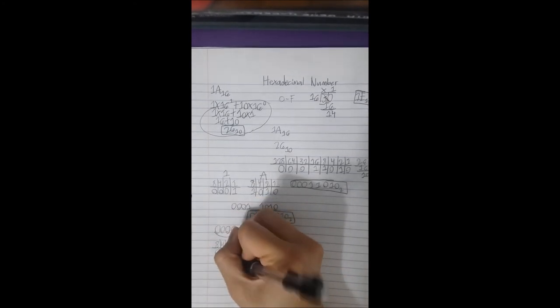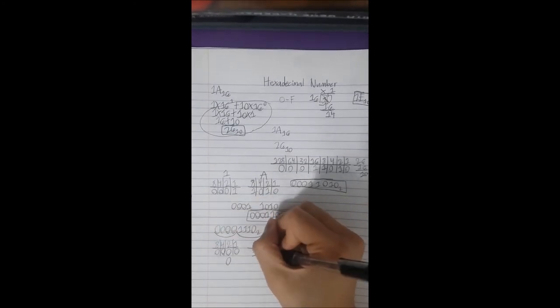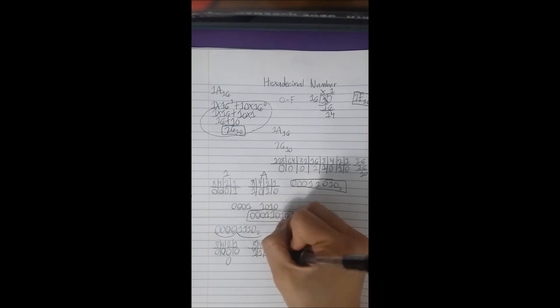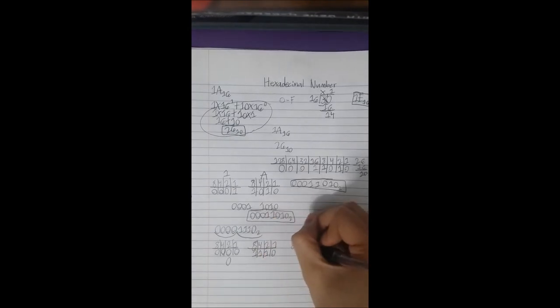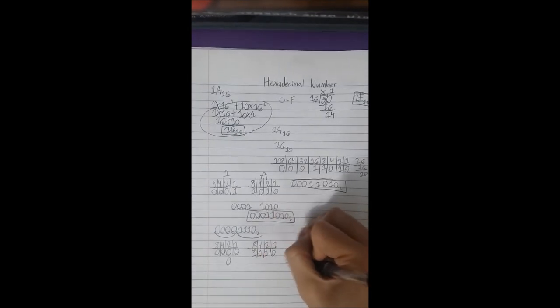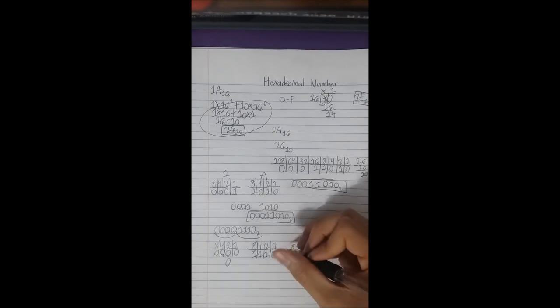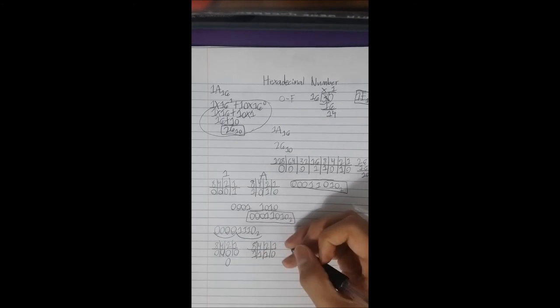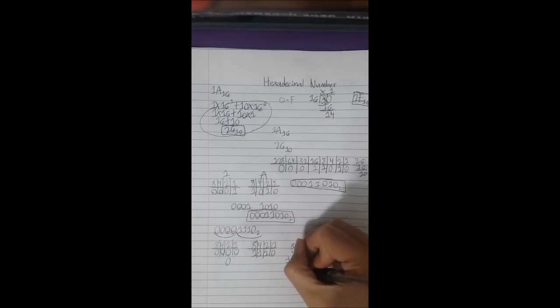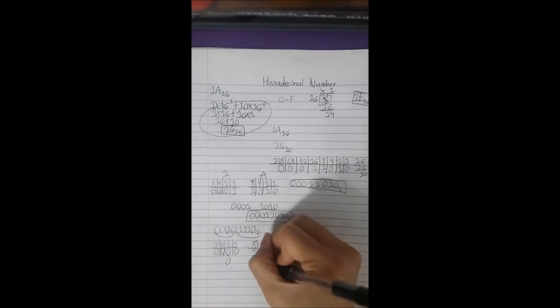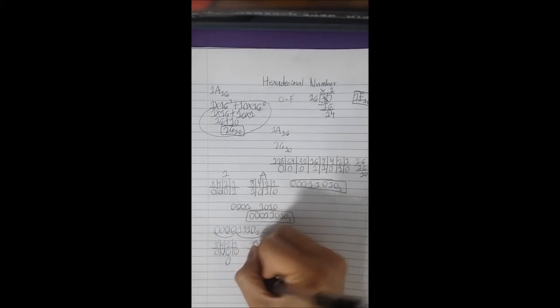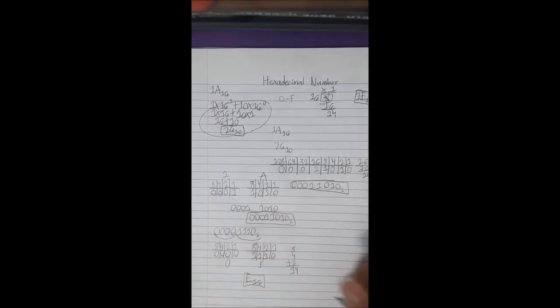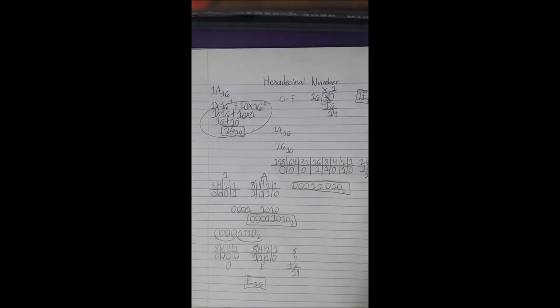These are all zeros, so it's going to be zero. This is 8, 4, 2, because you only add the ones. The zeros, you just don't do anything. So that's your hexadecimal. It's just E.